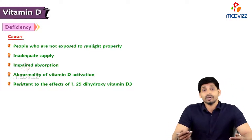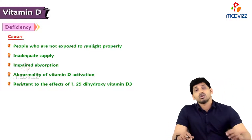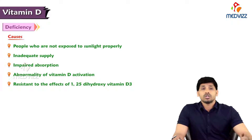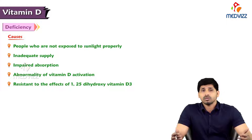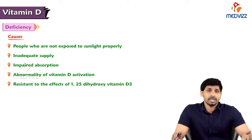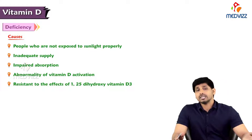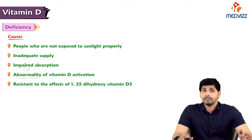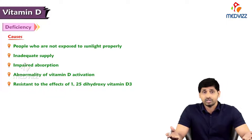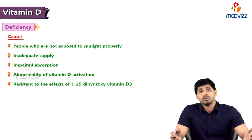The second cause is inadequate dietary supply. Next to sunlight, food sources are the best resources for vitamin D, so not including ample amounts of vitamin D in your diet also leads to deficiency. Additionally, serious malabsorption syndrome or disorders lead to impaired absorption of vitamin D, causing chylomicron deficiency and ultimately vitamin D deficiency.